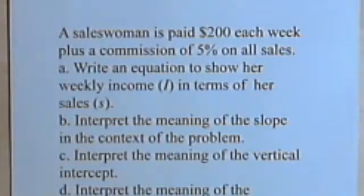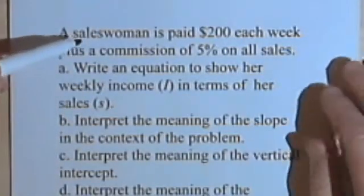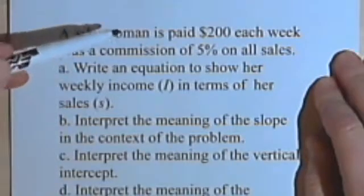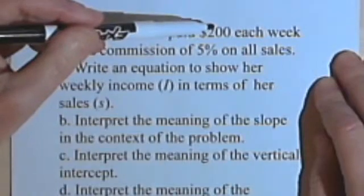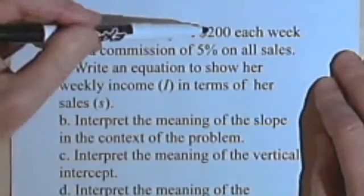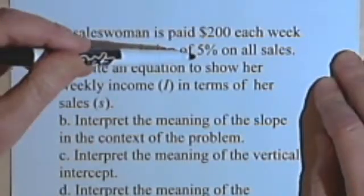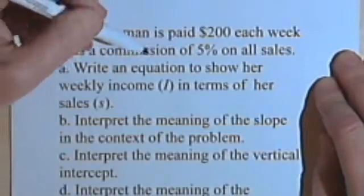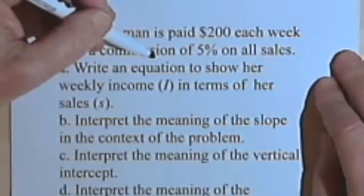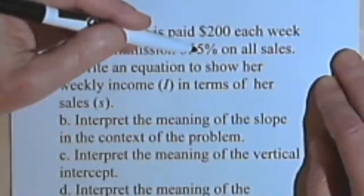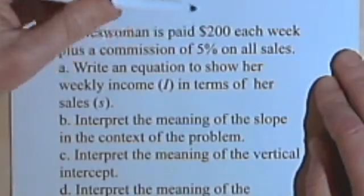Let's make sure you understand what that means. If somebody works on commission, first of all, she's getting $200 for going to work for the week. The commission part means that for each sale that she makes, they take 5% of that sale and add it to her salary.